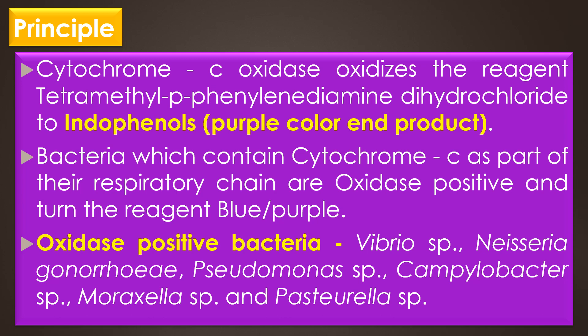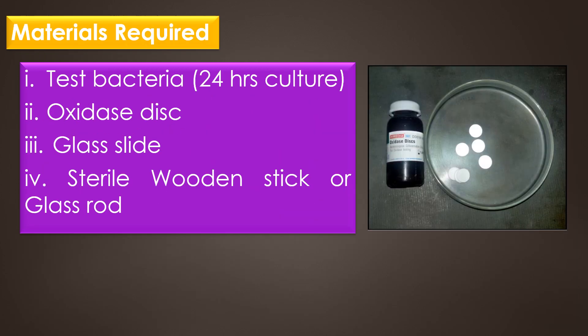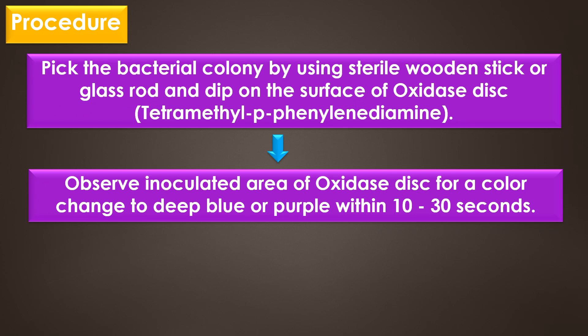The materials required for the oxidase test are a 24-hour test bacterial culture, oxidase disc, glass slide, and a sterile wooden stick or glass rod. The procedure: first, pick the bacterial colony using a sterile wooden stick or glass rod and dip it on the surface of the oxidase disc which contains tetramethyl p-phenylenediamine. Do not pick the inoculum with a metal loop because the oxidase reagent may react with the metal.